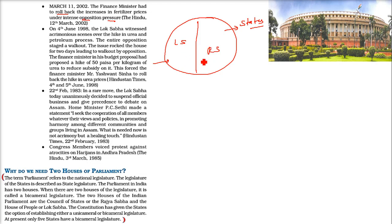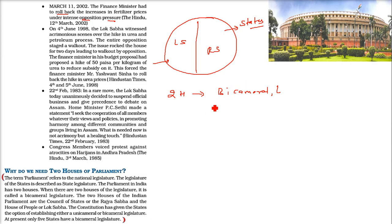When we have two houses of legislature, we call it a bicameral legislature. The two houses of the Indian Parliament are the Rajya Sabha — also called the Council of States — and the Lok Sabha — also called the House of the People.